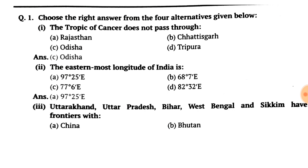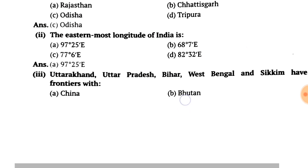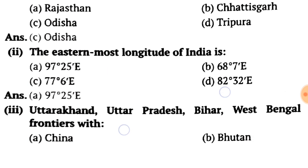Choose the right answer from the four alternatives given below. The first question is: the Tropic of Cancer does not pass through which state of our country? The options are Rajasthan, Chhattisgarh, Orissa, and Tripura. The Tropic of Cancer passes through Rajasthan, Gujarat, Madhya Pradesh, Chhattisgarh, West Bengal, and Tripura. So Orissa is the answer — option C.